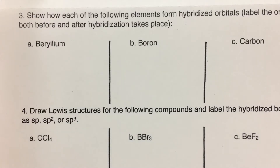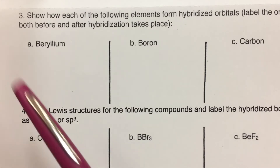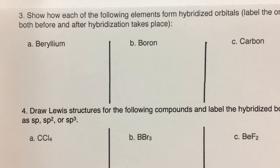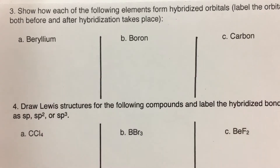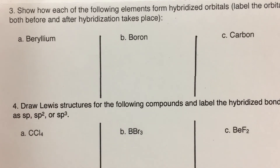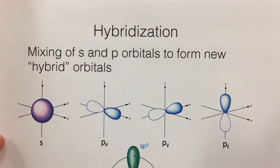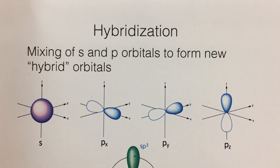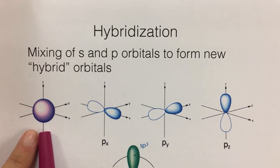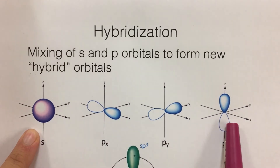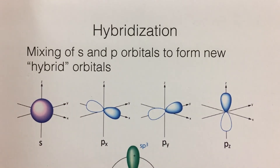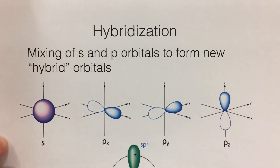The last topic for the video is hybridization, covered in questions three and four. I'll do part A for both and run through the notes on hybridization so the rest should be clear. Hybridization is when you mix S and P orbitals to form new hybrid orbitals. We learned about three types: SP, SP2, and SP3, formed by combining the S orbital with one, two, or three P orbitals respectively. They merge together to form new hybrid orbitals.